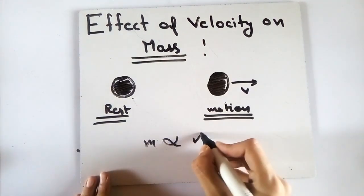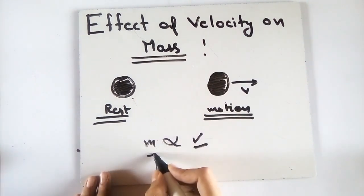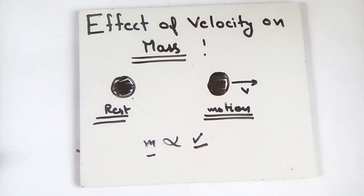So mass is directly proportional to velocity. As velocity increases, mass also increases. But in our everyday lives, mass is constant.